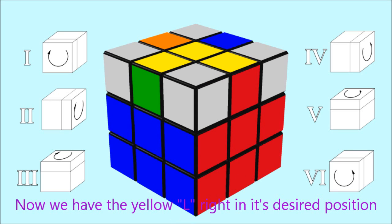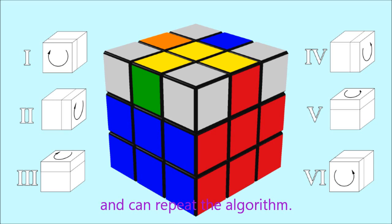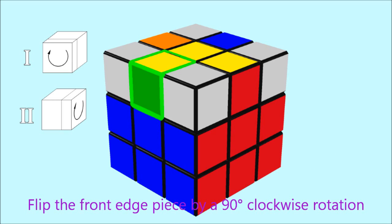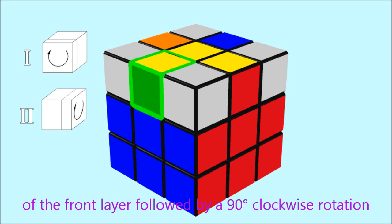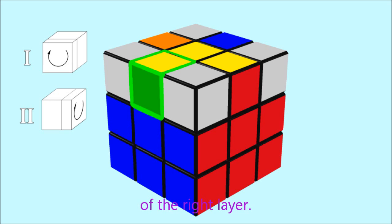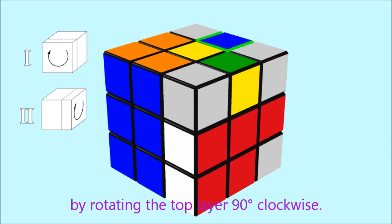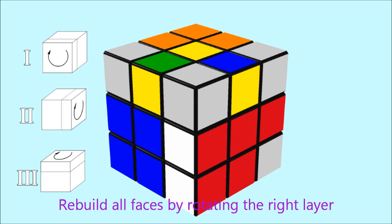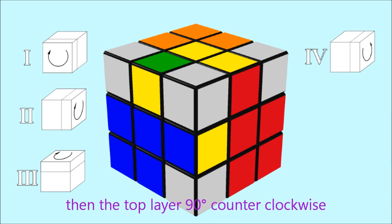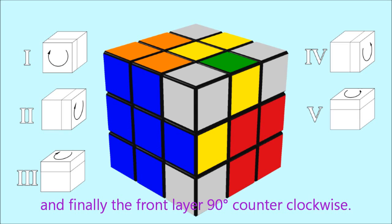Now we have the yellow L right in its desired position and can repeat the algorithm. Flip the front edge piece by a 90 degrees clockwise rotation of the front layer, followed by a 90 degrees clockwise rotation of the right layer. Position the back layer edge piece over the right layer by rotating the top layer 90 degrees clockwise. Rebuild all faces by rotating the right layer 90 degrees counterclockwise, then the top layer 90 degrees counterclockwise, and finally the front layer 90 degrees counterclockwise.